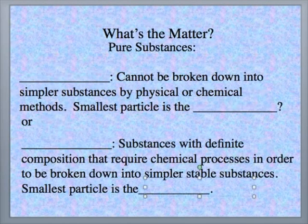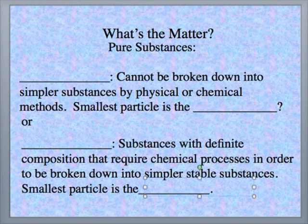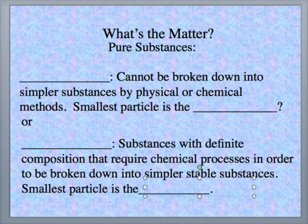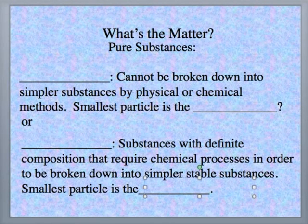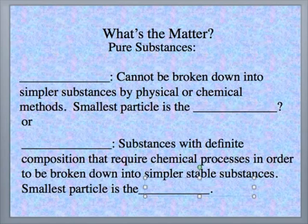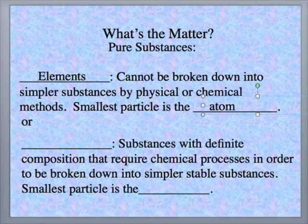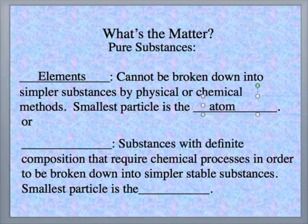Now, let's talk about pure substances. For this kind of matter, a type of pure substance, it cannot be broken down into simpler substances by physical or chemical methods. Those are elements. And the smallest particle of an element is the atom. Pure substances that can't be broken down into simpler substances by physical or chemical methods, those are elements. And the smallest particle of an element is the atom.